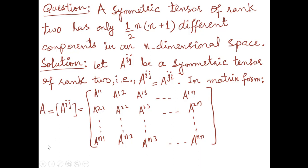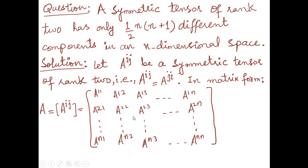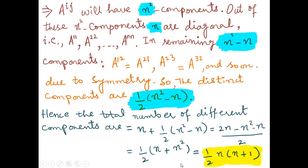Writing the tensor in matrix form, with the first index row-wise and the second index column-wise, we get an n×n matrix. This implies aij will have n² components total, since it is an order n×n matrix.